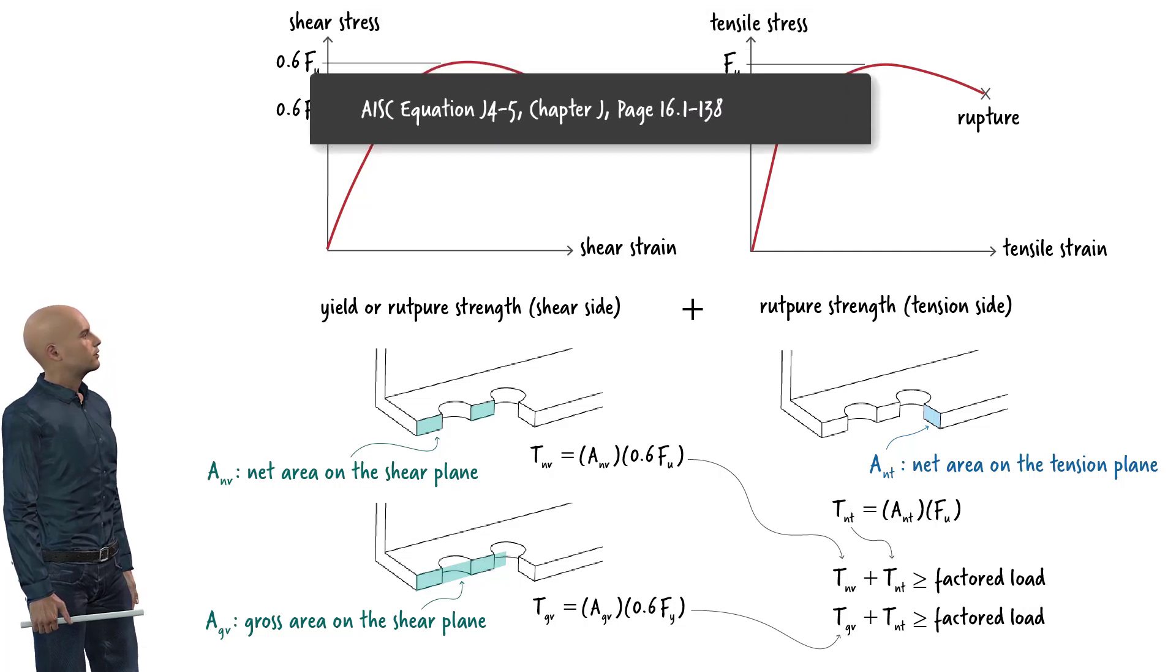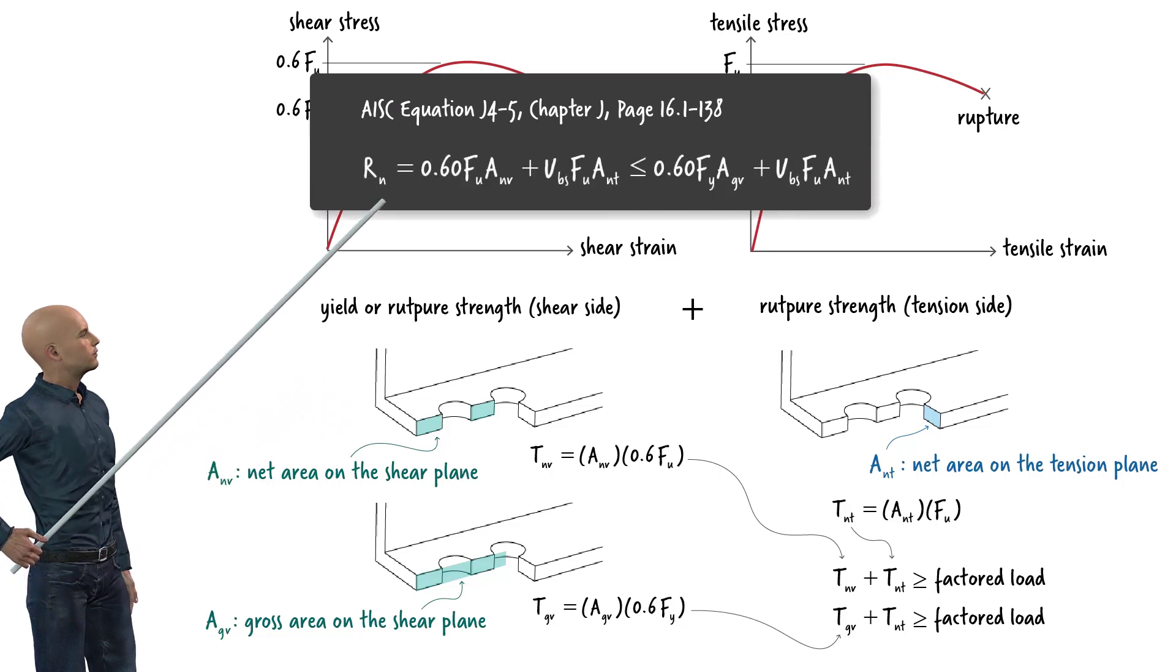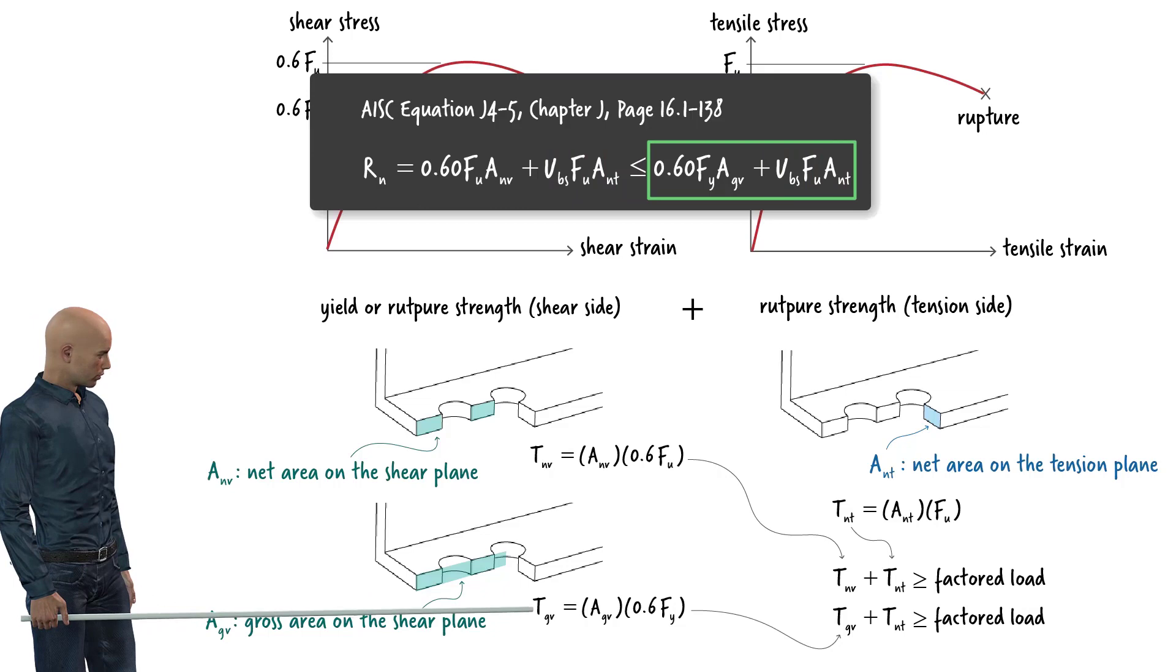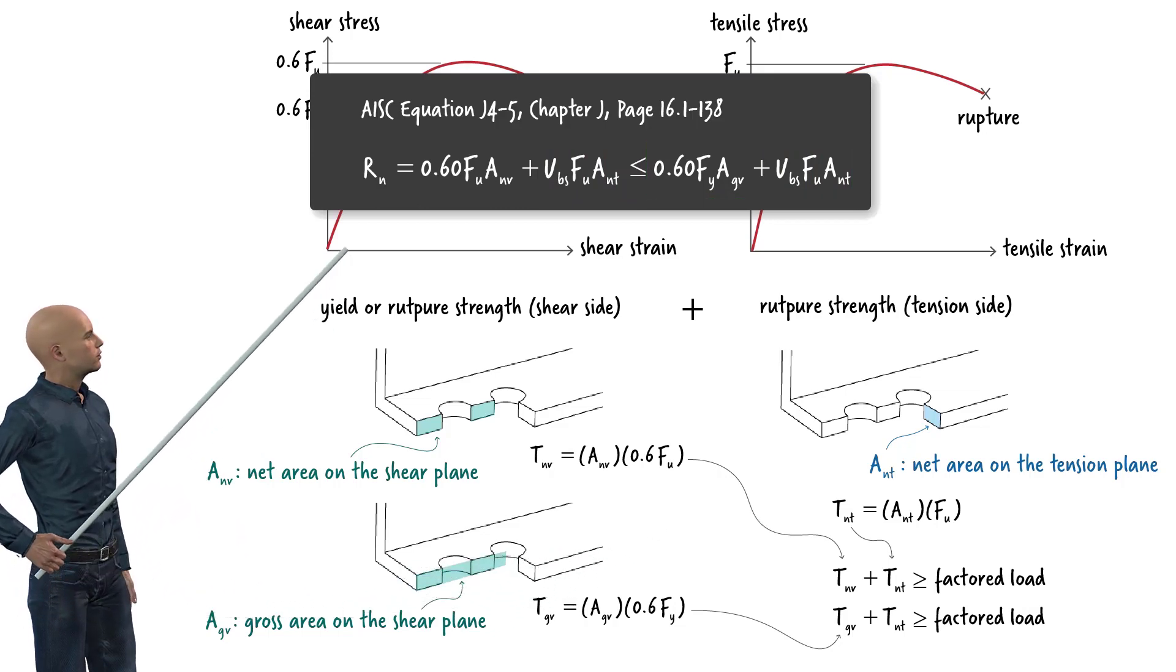AISC equation J4-5 presents these two equations this way. The expression to the left of the inequality sign is the sum of these two forces. The expression to the right of the inequality sign is the sum of these two forces. This equation simply states that the block shear strength equals the smaller of the two expressions.